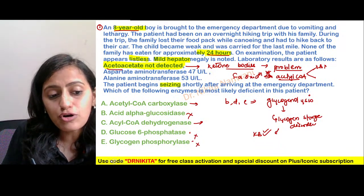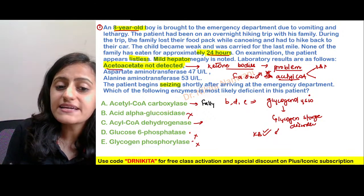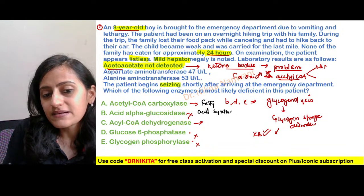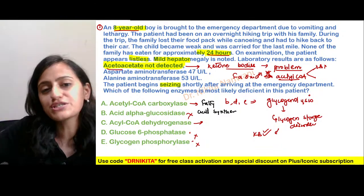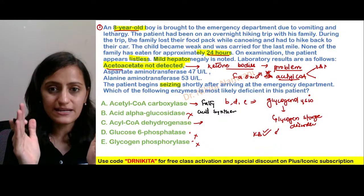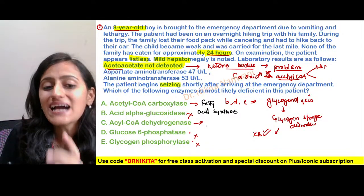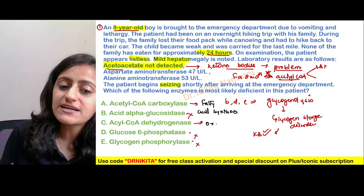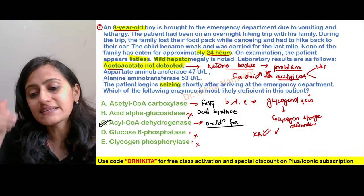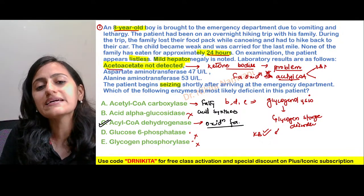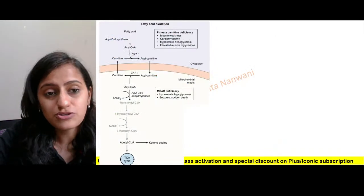Acetyl-CoA carboxylase is the rate-limiting enzyme of fatty acid synthesis — we are adding carbon atoms to make a long-chain fatty acid. That is fatty acid synthesis. Acyl-CoA dehydrogenase, on the other hand, is basically fatty acid oxidation. So the answer is C — acyl-CoA dehydrogenase — because the problem is with fatty acid oxidation.